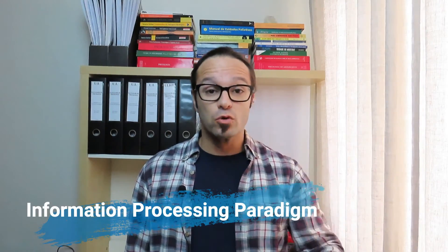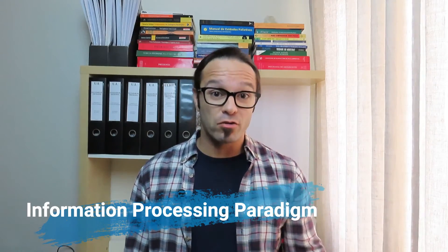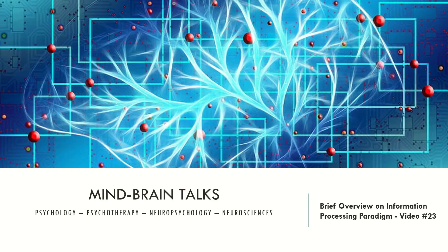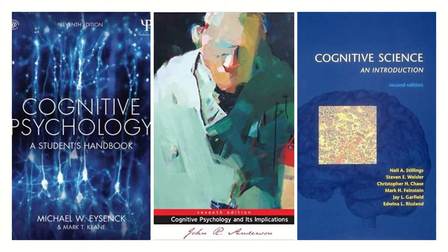Today we will talk about the information processing paradigm. We will look at the major models that shaped this paradigm and how it has had impacts on cognitive psychology. But first, let's look at the books I recommend: the first is Cognitive Psychology: A Student's Handbook; the second is Cognitive Psychology and Its Implications; and the third is An Introduction to Cognitive Science.